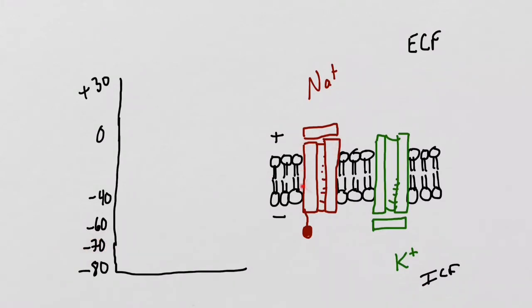On the cell membrane, we'll have sodium voltage-gated channels and potassium voltage-gated channels. The resting membrane potential of negative 70 millivolts will be shown as a straight line on the graph.